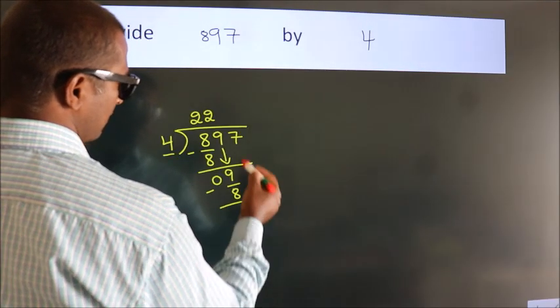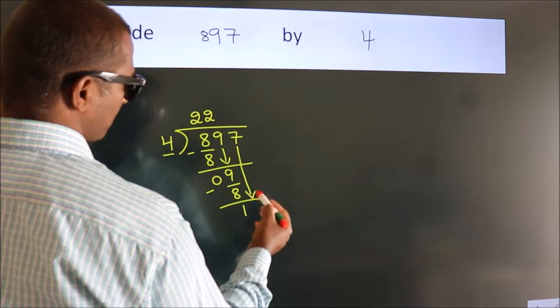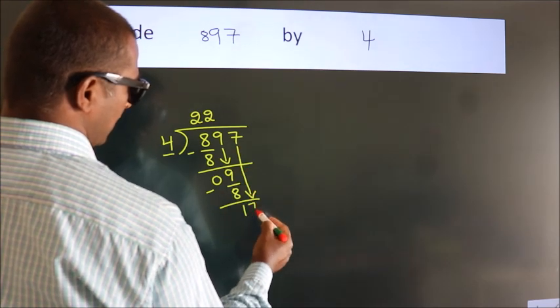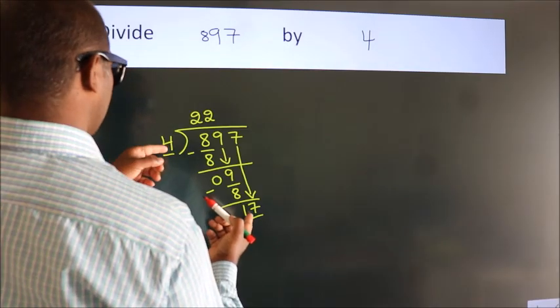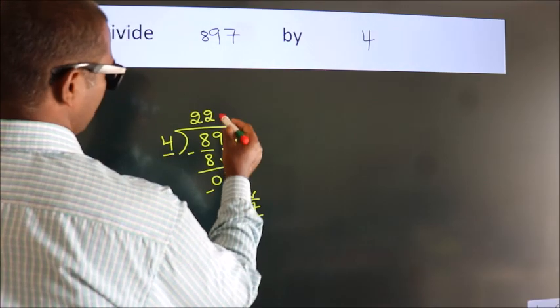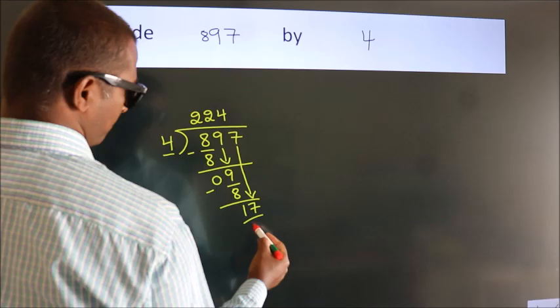After this, bring down the beside number, so 7 down. That gives us 17. A number close to 17 in the 4 table is 4 times 4 equals 16.